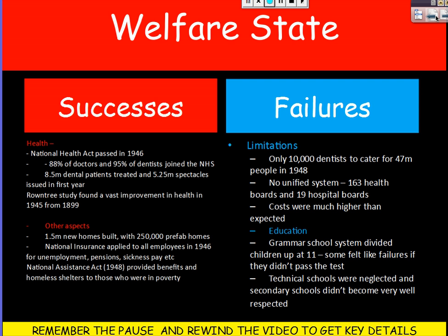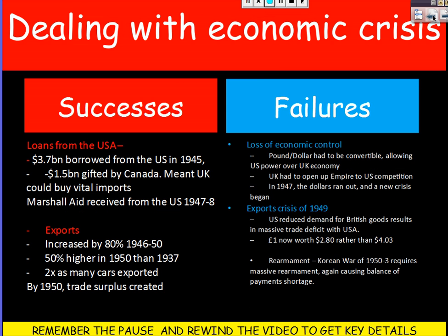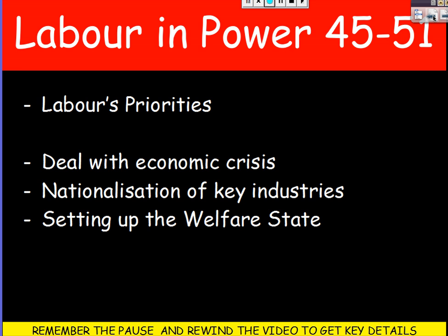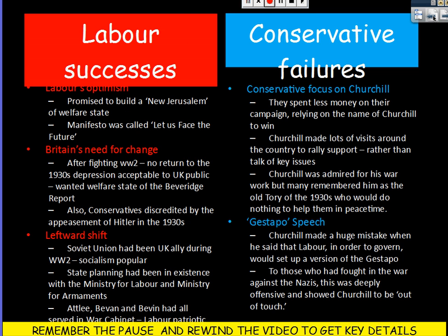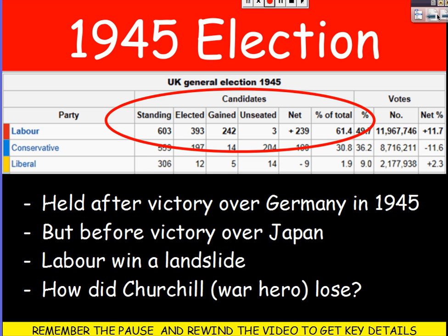All of these things show that the key things to know for the exam are the successes and failures of each of these three aspects — economic crisis, nationalisation, and the welfare state — and then the Labour successes and Conservative failures explaining why Labour won in 1945 in the first place. Thank you very much.